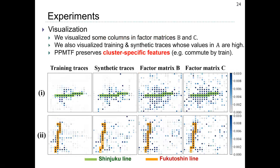We also visualized some columns in factor matrices B and C, along with training traces and synthetic traces whose values in A are high. We can see that PPMTF preserves cluster-specific features such as those who commute by train, and we generate synthetic traces based on these cluster-specific features.